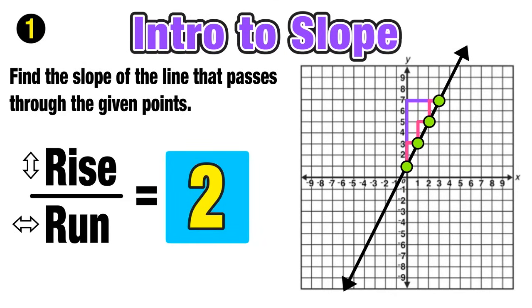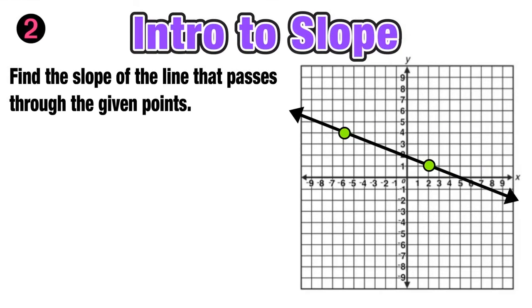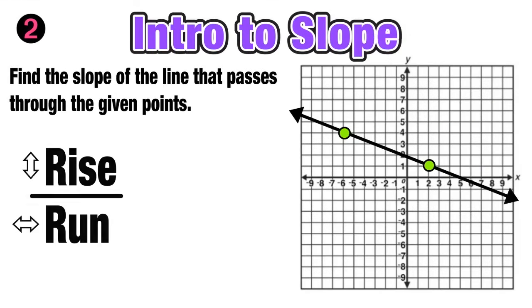This last example is just like the last one, except now we're dealing with a different line. Now notice that this line decreases from left to right, so its slope will be negative. So now we want to find rise over run between those two given points. Since the slope is negative, we rise downward and then we run to the right to make that staircase image.